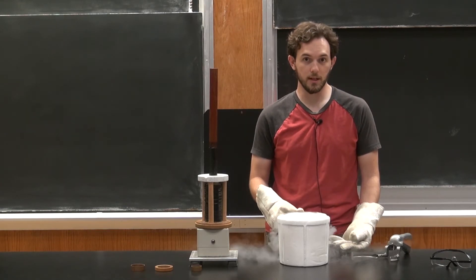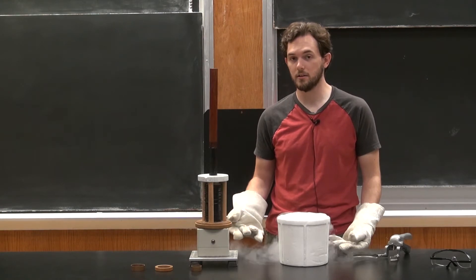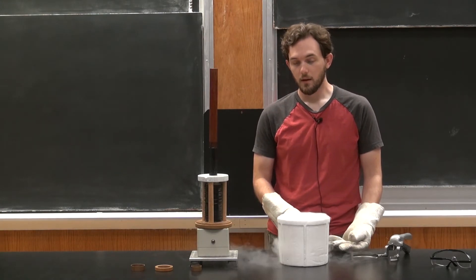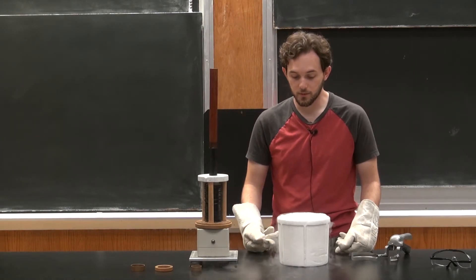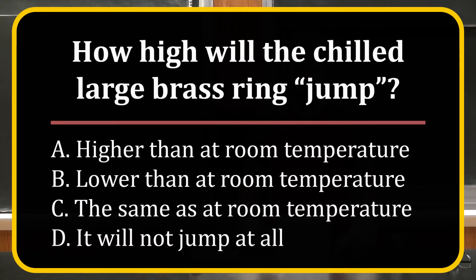So although it's the same material, at low temperatures metals have a higher conductivity than at room temperature. So what do we think that'll do to the height that it jumps to? If it has a higher conductivity, will it jump higher, lower, or not at all?